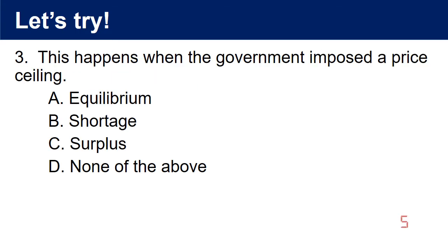Question 3: This happens when the government imposes a price ceiling. The choices are: a. Equilibrium, b. Shortage, c. Surplus, d. None of the above. The answer is b. Shortage.